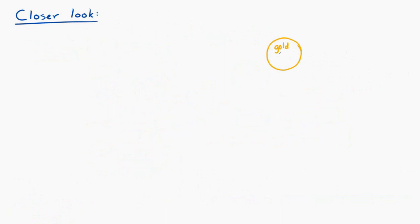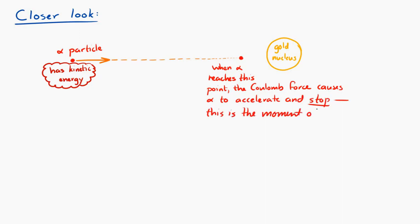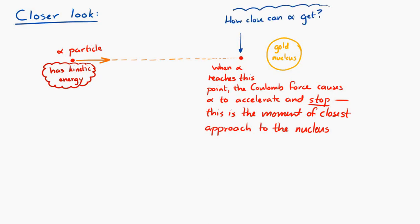This is where the idea of the nucleus came from. The nucleus fit the description of a small, relatively massive, and positively charged center to the atom. Let's take a closer look at this situation. Imagine one single alpha particle moving in toward a gold nucleus, right on target for the center of the gold nucleus. That alpha particle is going to come in and reach some closest distance from the gold nucleus before the Coulomb force causes it to stop.